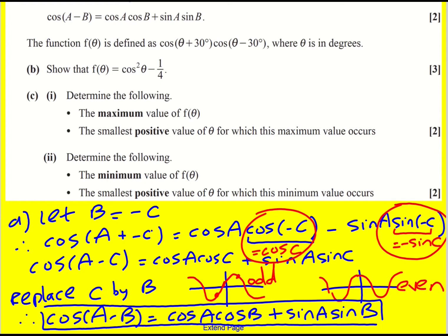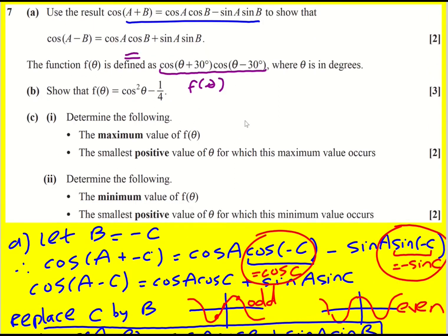Now in part b, we're given that f(θ) is defined as a certain expression, where θ is in degrees, and we're asked to show that it can be simplified to cos²(θ) minus a quarter. So I'm going to use the results we've just obtained. f(θ) is therefore going to be cos(θ)cos(30) minus sin(θ)...